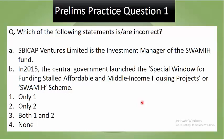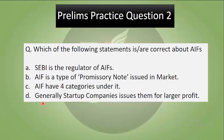Now we will look at today's prelims practice questions based on this topic. Question 1 — Which of the following is incorrect? (A) SBI CAP Ventures Limited is the investment manager of the SWAMIH fund. (B) In 2015, the central government launched the Special Window for funding stalled affordable and middle-income housing projects (SWAMIH scheme). The correct answer is Option 2 only, as SWAMIH was launched in 2019, not 2015. Question 2 — Which of the following statements is correct about AIFs? (A) SEBI is the regulator. (B) AIF is a type of promissory note issued in the market. (C) AIF has 4 categories under it. (D) Generally start-up companies issue them for larger profit. You can type your answer in the comments section.